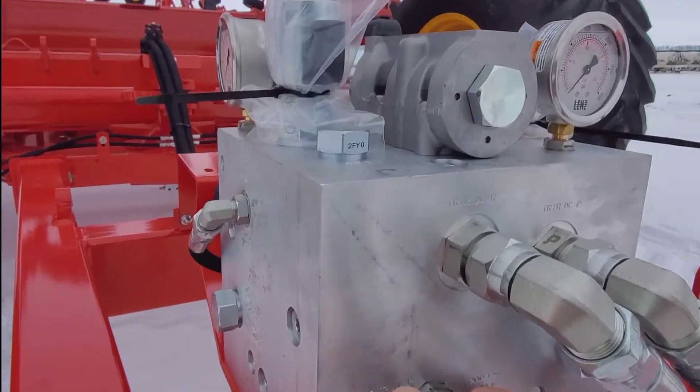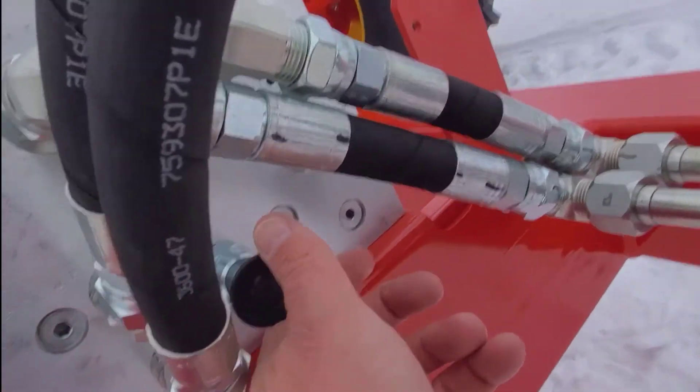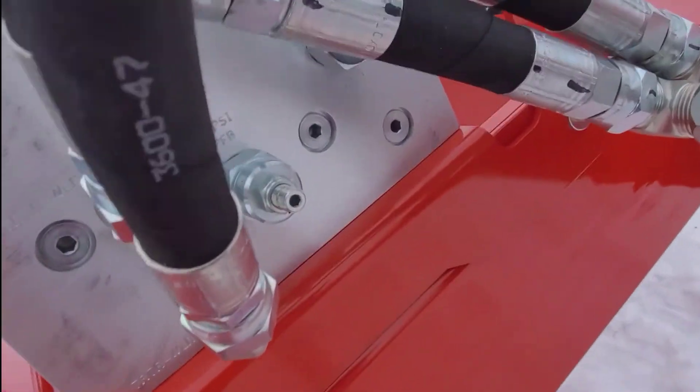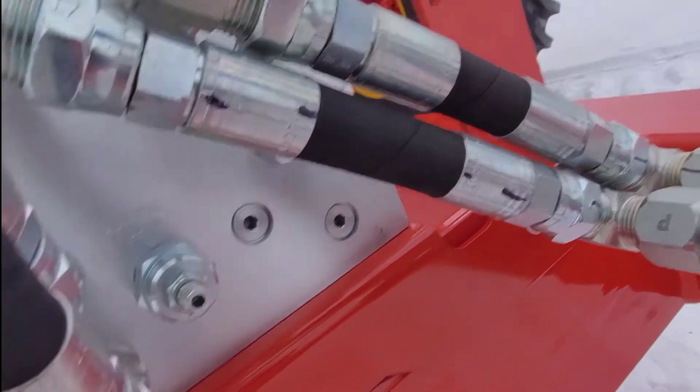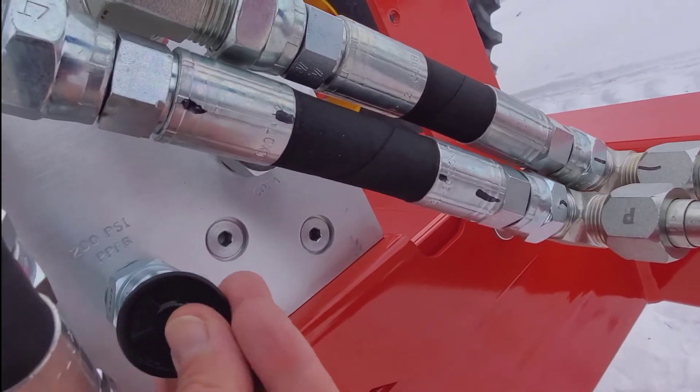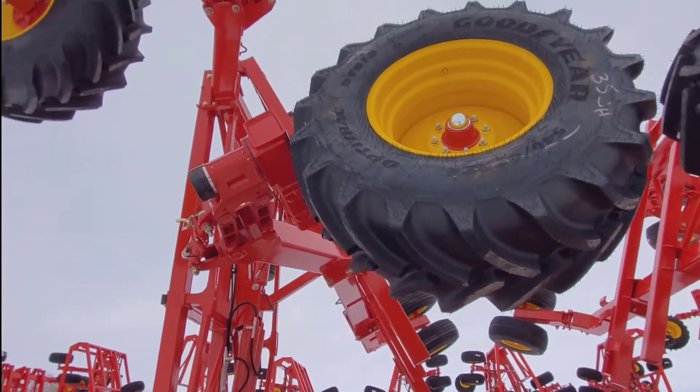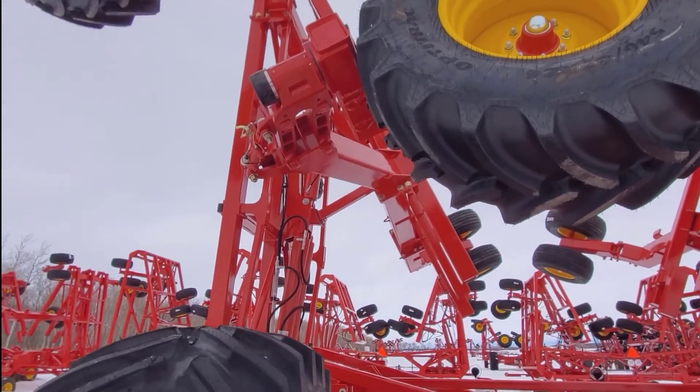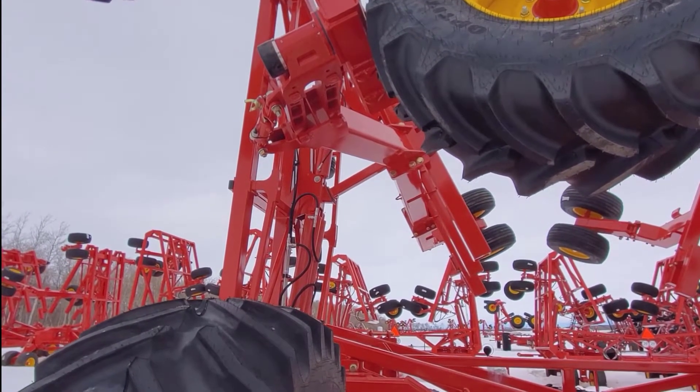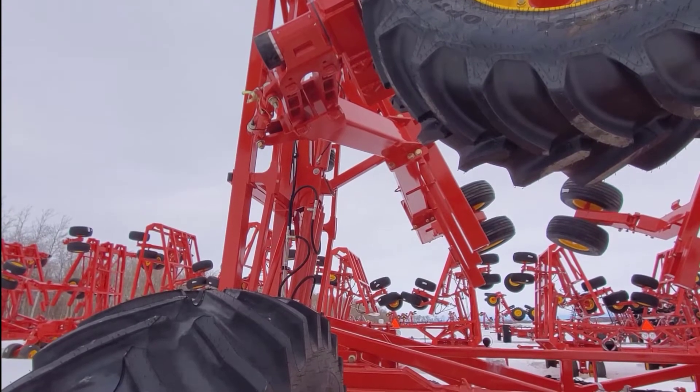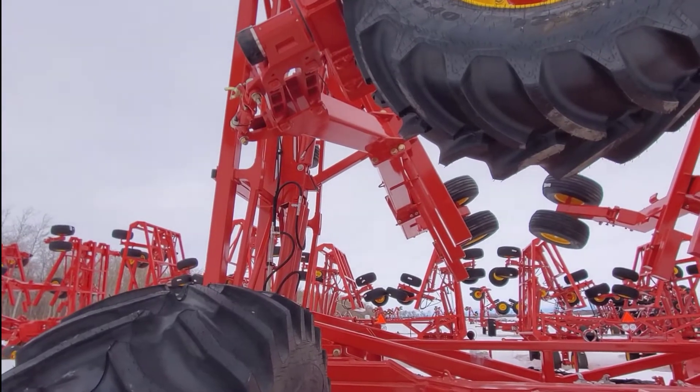We have this inner wing down pressure valve, the cap here and adjustment. We can adjust that, add a little bit of pressure to the base end of the inner wing cylinders, effectively pushing that wing section down. Normal operation you don't run with inner wing down pressure because there is enough weight on the frame.